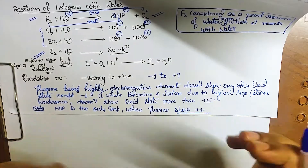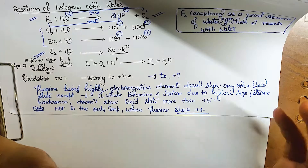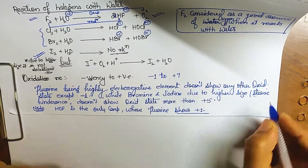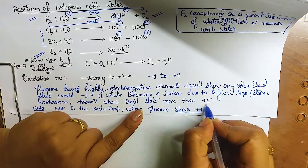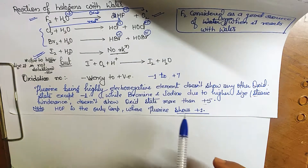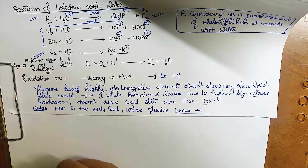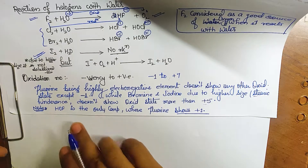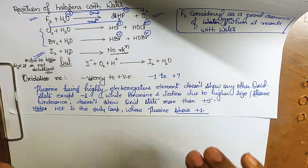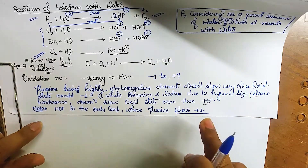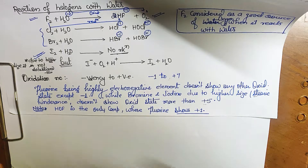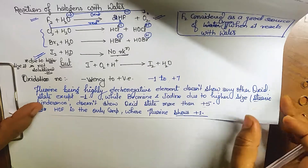Bromine and iodine, due to their larger atomic size, experience steric hindrance and therefore cannot show oxidation states above +5. One important exception: HOF (hypofluorous acid) is the only compound where fluorine shows the +1 oxidation state. Otherwise, fluorine is always in either the −1 state or zero (free state).